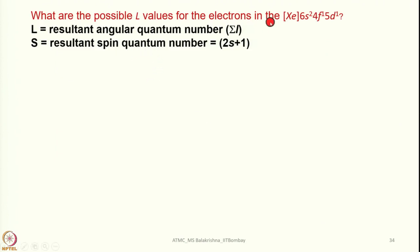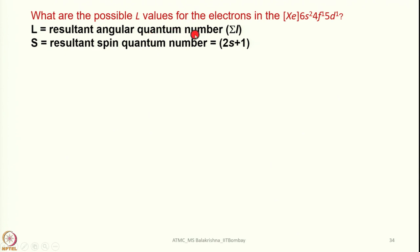Now, for example, if an electronic configuration is given — say, a 4f orbital has 1 electron and a 5d orbital has 1 electron — we need to find all possible resultant L values (sigma L) and spin multiplicity (2S+1). Only one electron is in each subshell, so we first determine the L value for each.